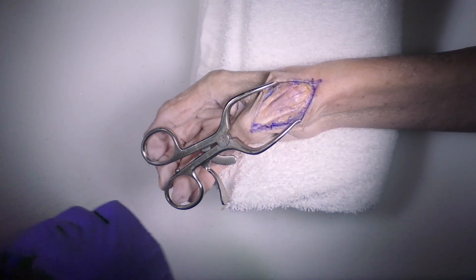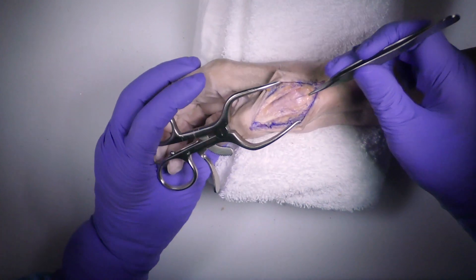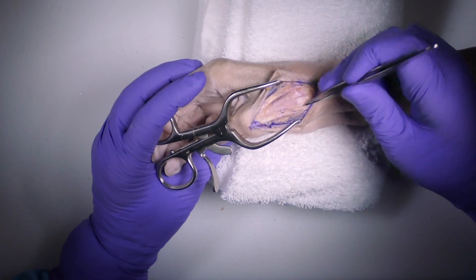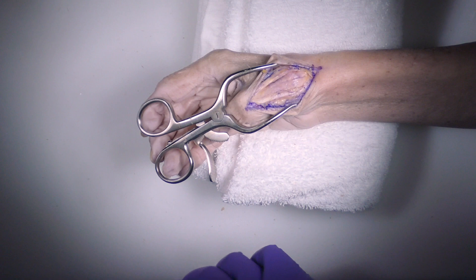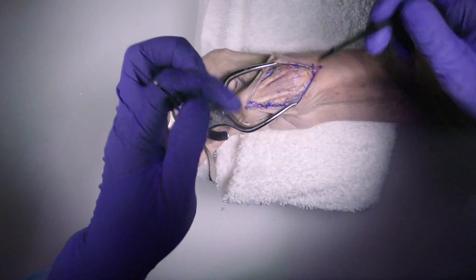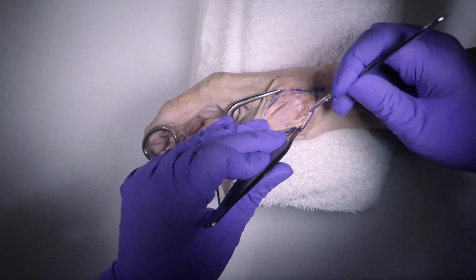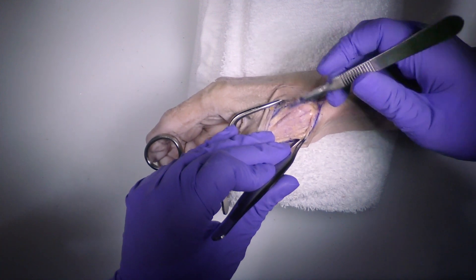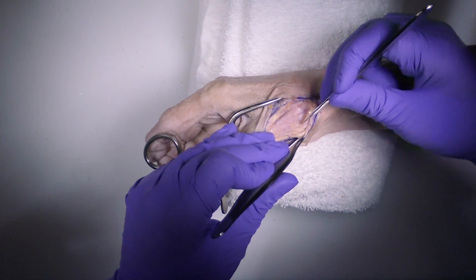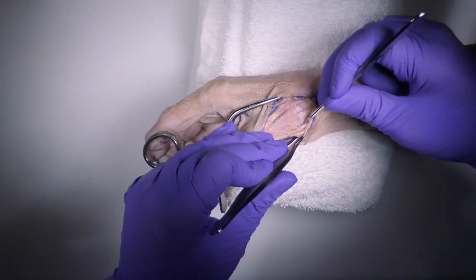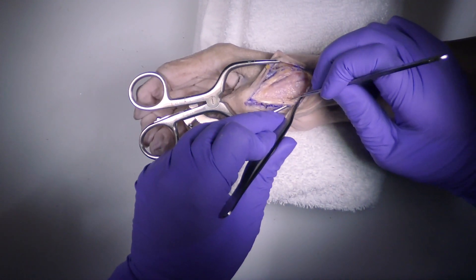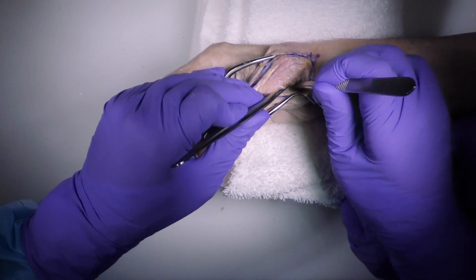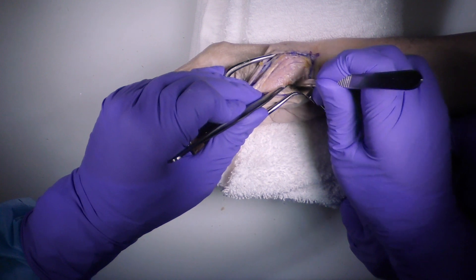The other beauty of that angle is once I apply my plate, the pins are not going to block my plate application. If I need to and I'm struggling to get that reduction, I can actually raise my exposure and dissection volarly. I can keep exposing the thumb metacarpal and enter the CMC joint on this side, and I'm actually in the joint now.